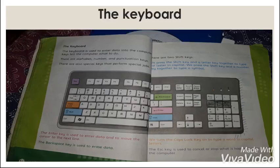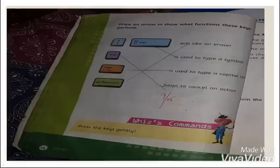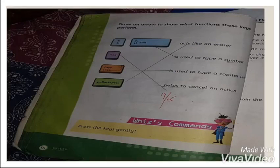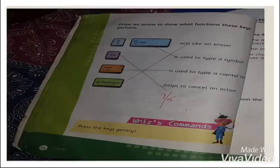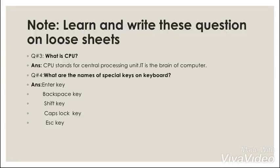Now on page number 16, draw an arrow to show what function these keys perform. As we have discussed the function, now you have to match the keys with their function. Now you have to write question number three and question number four on loose sheet. What is CPU? CPU stands for central processing unit and it is the brain of computer. And what are the names of special keys on keyboard?